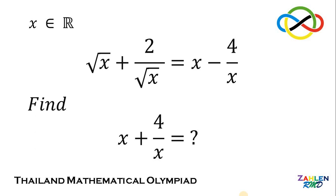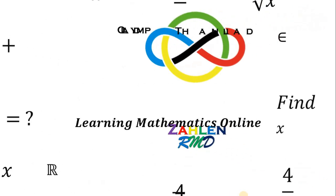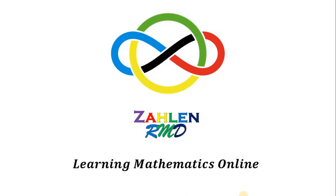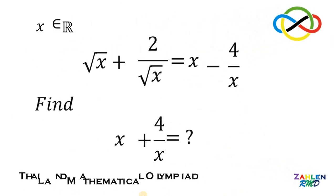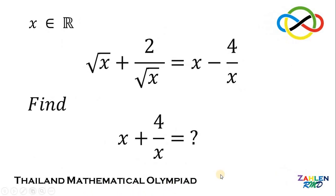Good day everyone, here's our math challenge for today. Here's our question, from the Thailand Mathematical Olympiad. Solve for the value of x plus 4 over x, given the equation: square root of x plus 2 over square root of x equals x minus 4 over x, where x is a real number.